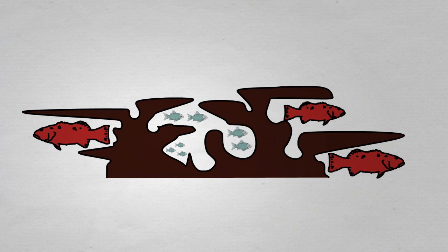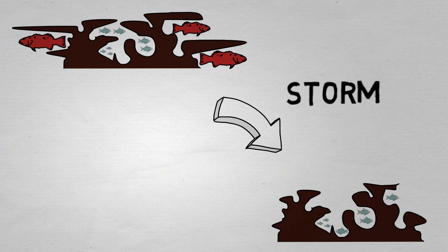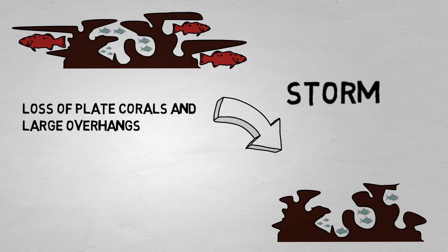However, climate change and associated impacts are unlikely to reduce reef structure at all scales. What does this mean? A storm that breaks plating corals reduces the number of large overhangs, but will not affect the number of smaller holes and crevices.